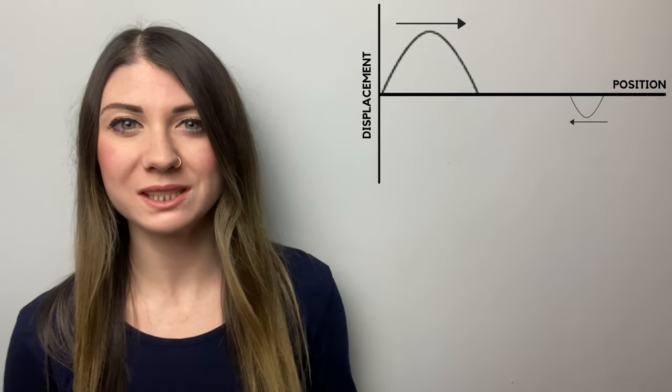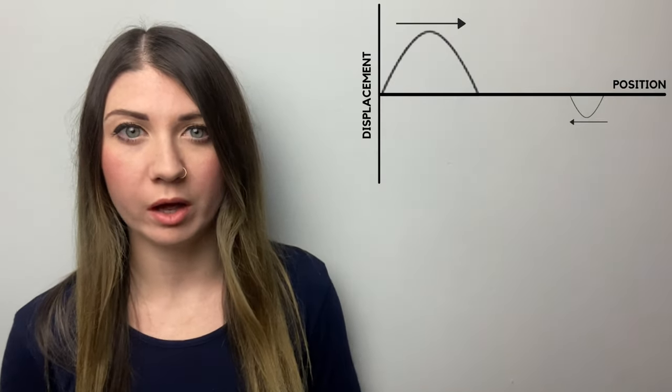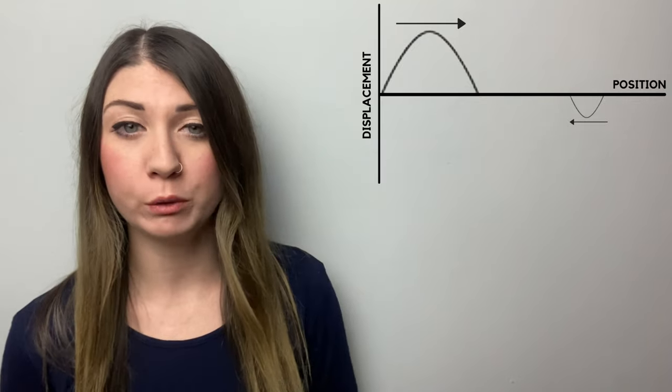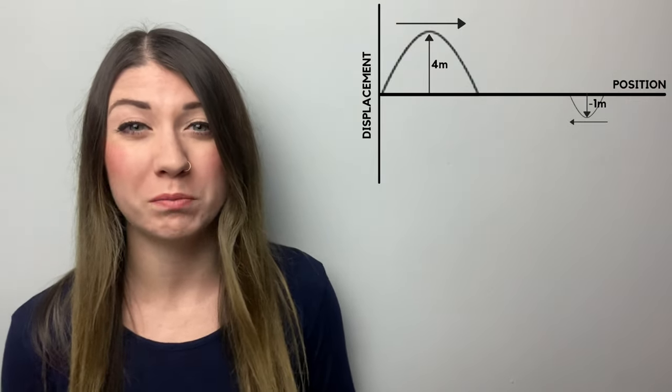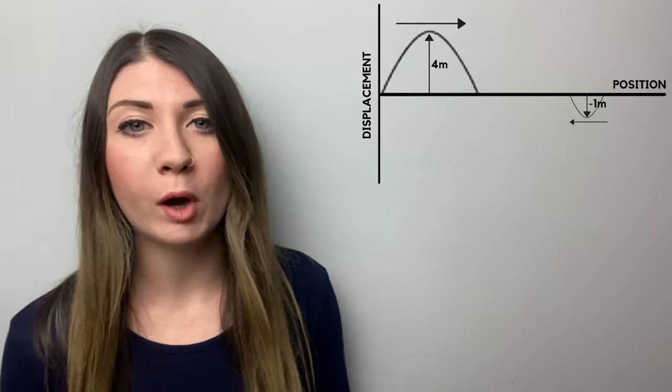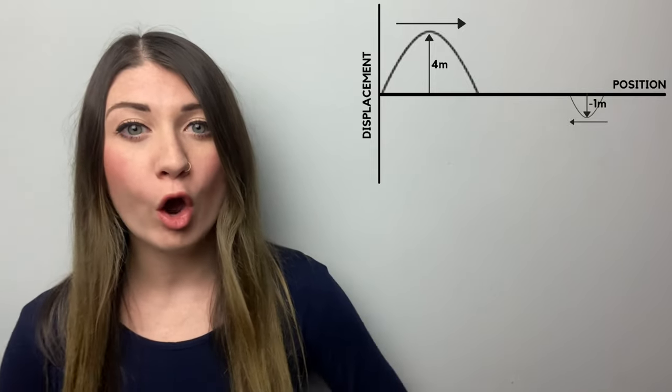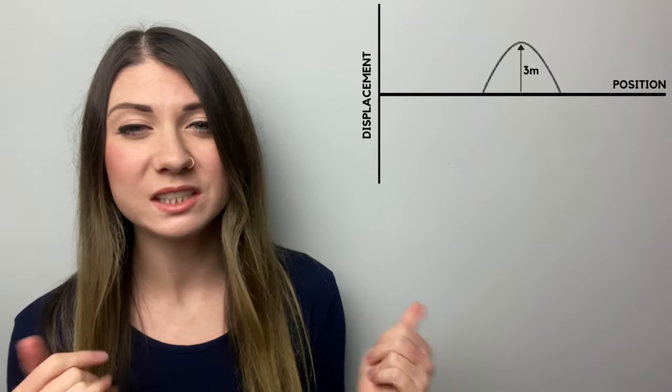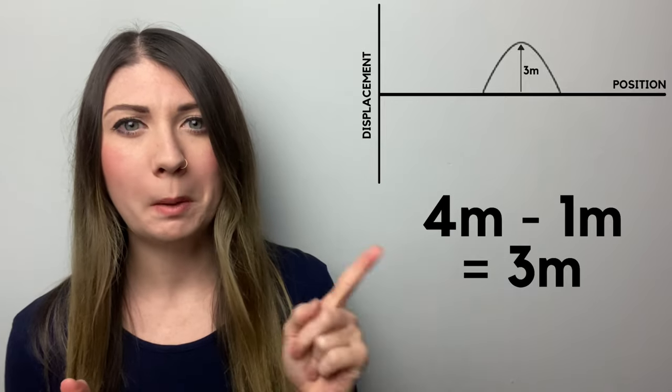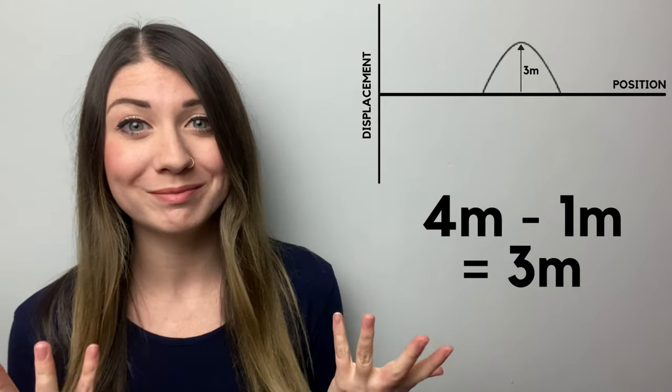Example two: if you had a crest and a trough moving towards each other where wave one had an amplitude of four meters and wave two had an amplitude of minus one meters, then the combined wave would have an amplitude of three meters. See what I did there? That's four minus one equals three.